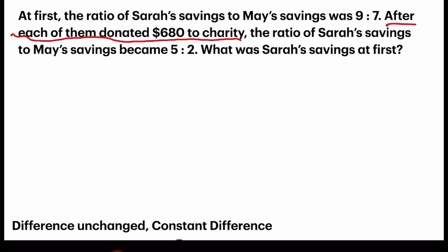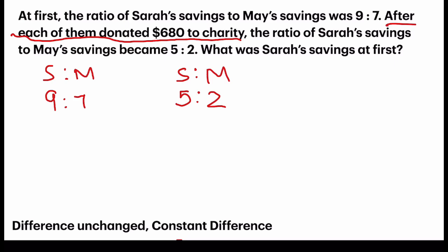What was Sarah's savings at first? I'm going to write down some notes. Before: Sarah to May is 9 to 7. After: Sarah to May became 5 to 2. I'm going to apply the difference concept. From the before ratio, the difference is 9 minus 7, which gives 2 units. In the after ratio, 5 minus 2 gives 3 units. So we have 2 and 3 — by right they should represent the same units.